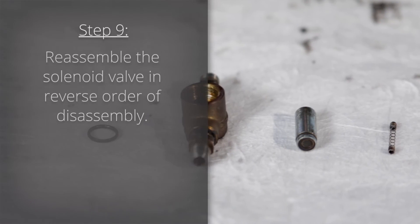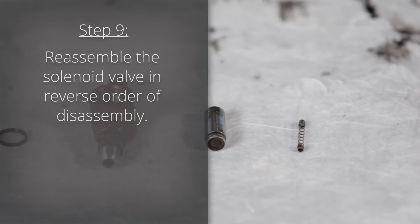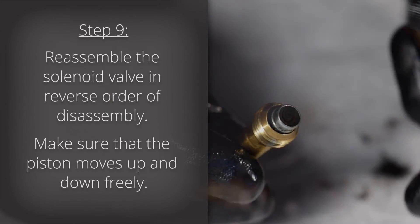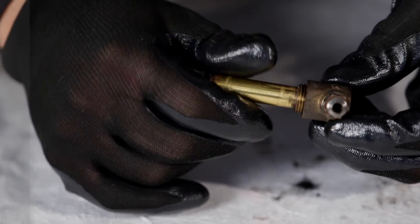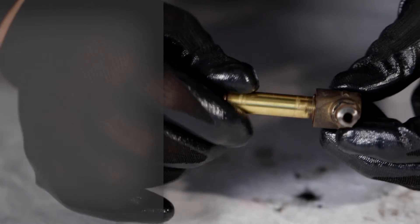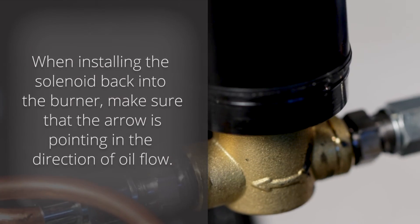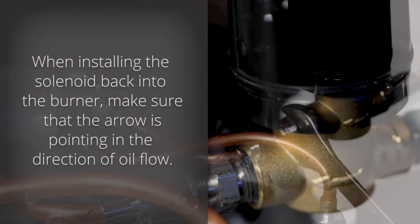Step 9: Reassemble the solenoid valve in reverse order of disassembly. Make sure that the piston moves up and down freely. When installing the solenoid back under the burner, make sure that the arrow is pointing in the direction of oil flow.